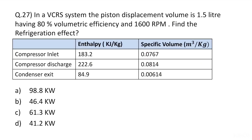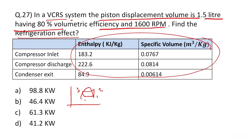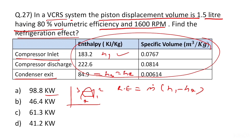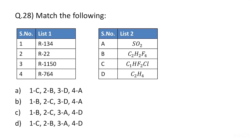Question 27: In a VCRS system, piston displacement volume = 1.5 L, volumetric efficiency = 80%. Find the refrigeration effect in kW. Refrigeration effect = ṁ × (h1 − h4), where h1 is the compressor inlet enthalpy and h4 is the condenser exit enthalpy (= h3). Mass flow rate: ṁ = 1.5 × 10⁻³ × volumetric efficiency × RPM/60. Substituting all values gives approximately 41.0–41.2 kW. This question is frequently asked and quite easy.